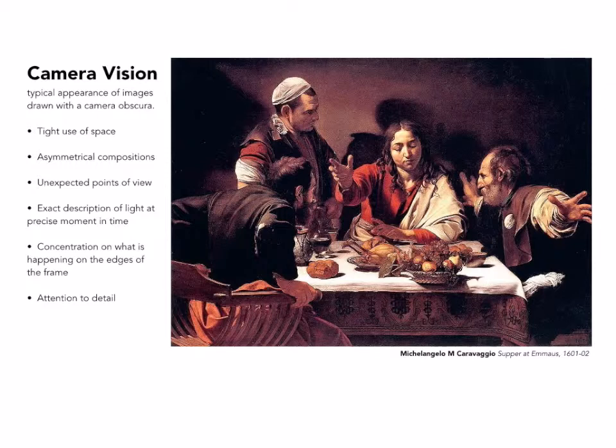Camera vision. With the use of the camera obscura, artists began seeing things differently and recording them differently. Some of the things that were affected by this new vision was the tight use of space, much tighter compositions, asymmetrical compositions, unexpected points of view, exact description of light at precise moments in time, a concentration on what is happening on the edges of the frame, and attention to detail.